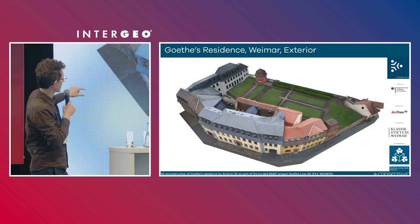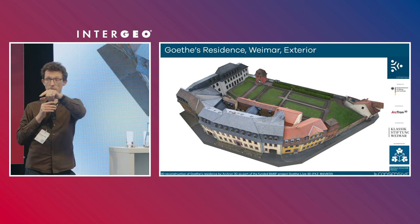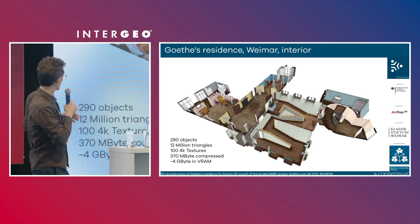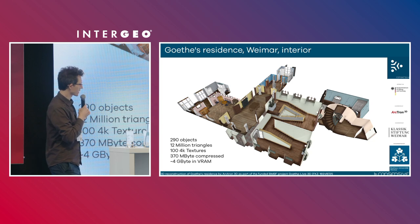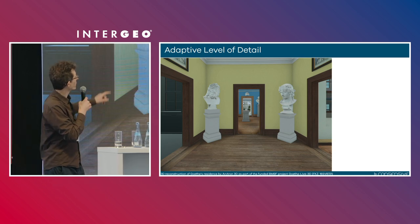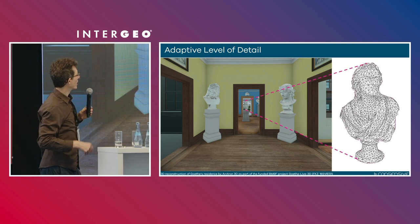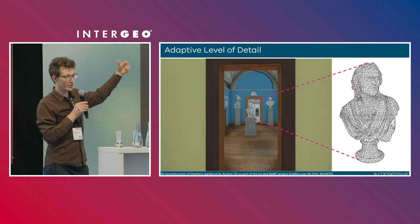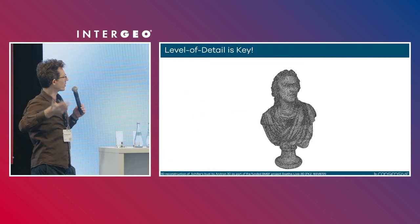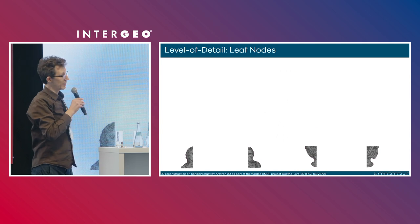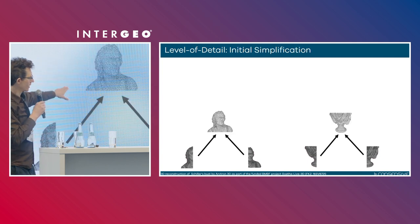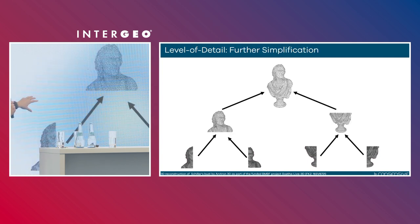On that example we have a lot less data — the interior has about 290 objects and only 12 million triangles, but that still won't fit in mobile memory. What we do is that at a given point you only need the resolution of, say, a particular statue. The closer you get, the more detail you get. The important part is that we don't just have levels of detail for every individual part — we segment everything into what we call leaf nodes, which represent the highest resolution of everything, and then we create a hierarchy of data.